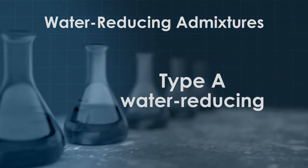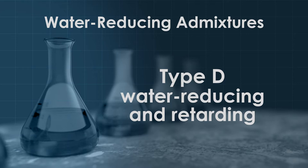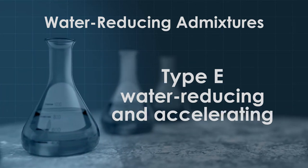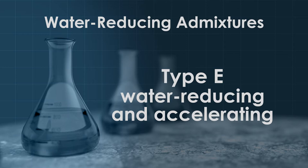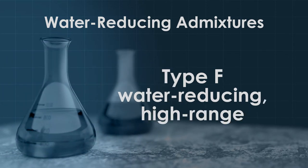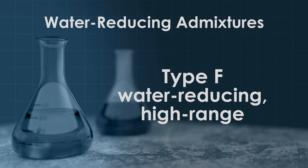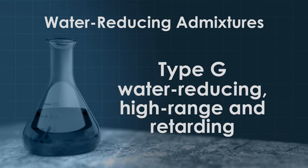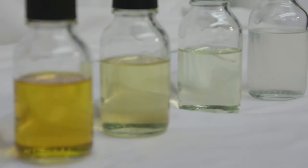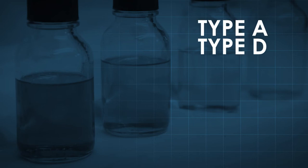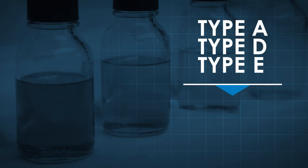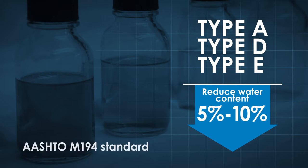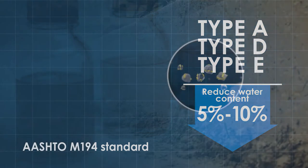Water-reducing admixtures are classified as follows: Type A, water reducing; Type D, water reducing and retarding; Type E, water reducing and accelerating; Type F, water reducing, high range; and Type G, water reducing, high range, and retarding. Normal or conventional water reducing admixtures, typically classified as Type A, D, or E, can reduce water content by approximately 5 to 10 percent without exceeding AASHTO M194 time of set limits.